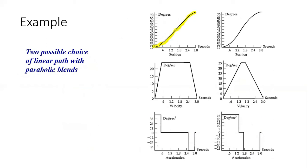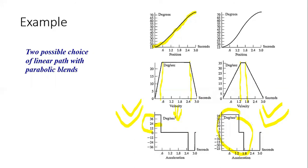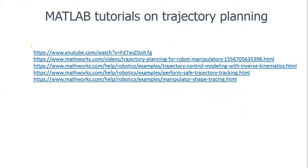There are two possible choices for the linear path with parabolic blends. In the first case, a smaller blend time is used, so the constant-velocity linear segment covers a larger period; in the second case, a longer blend time is used, giving a shorter constant-velocity period. Taking the derivative to get the acceleration profile shows that a shorter blend requires a higher acceleration magnitude, while a longer blend uses a smaller acceleration over a longer period. If the motor can only produce a limited torque, we use the longer-blend trajectory; if there is no acceleration limit, either can be chosen.